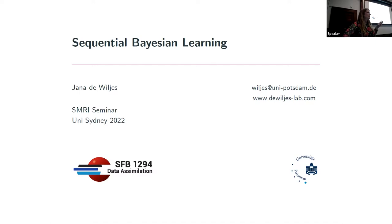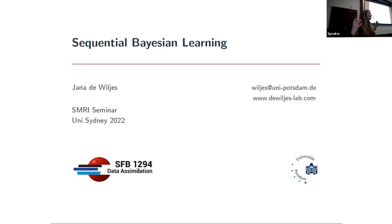The reason I called it 'sequential Bayesian learning' is because I'm personally exploring more and more the boundaries between what is classical machine learning and what I've been doing so far in data assimilation. The machine learning community is also going more and more in the direction of what I would personally call data assimilation - sometimes called Bayesian machine learning or physics-informed machine learning. I feel the fields are kind of growing together and there's not that much difference.